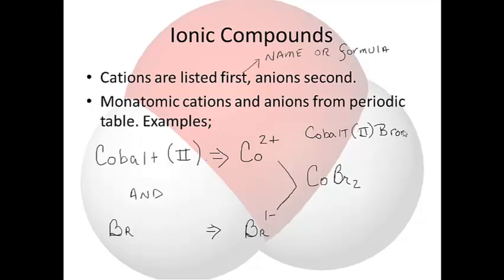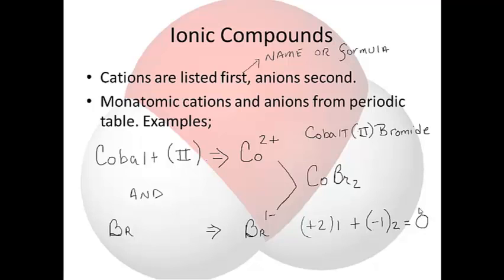These two coming together logically require one cobalt and two bromines, giving us CoBr₂. Check the math: cobalt is +2 and there is one of them; bromine is -1 and there are two of them. Does it add up to zero? Yes. Should it? Yes, because compounds are zero. We are getting into nomenclature and naming in the next unit, so this is just a precursor.